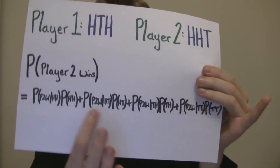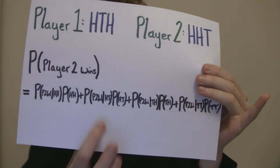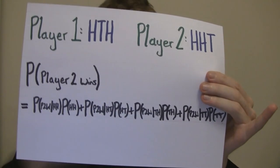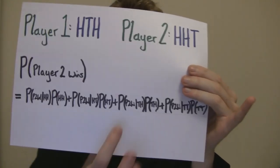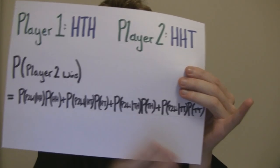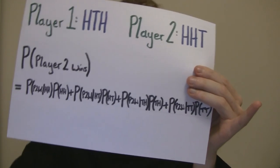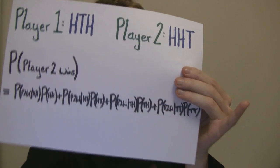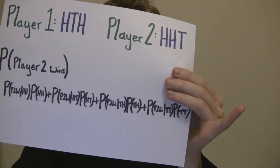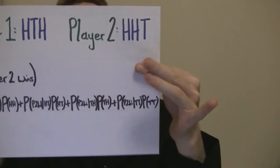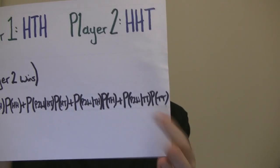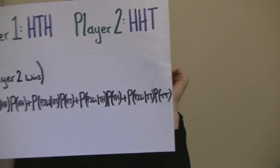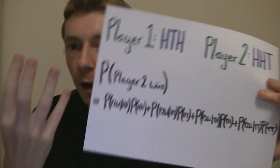Plus the probability that player two wins given the previous two coins were heads, tails, times the probability of heads, tails. Plus the probability that player two wins given the previous two coins was tails, heads, times the probability of tails, heads. Plus the probability that player two wins given the previous two coins was tails, tails, times the probability of tails, tails. Those are the four scenarios.